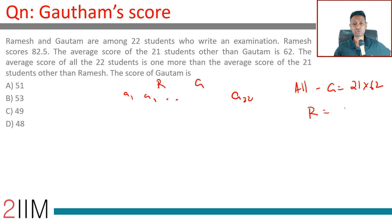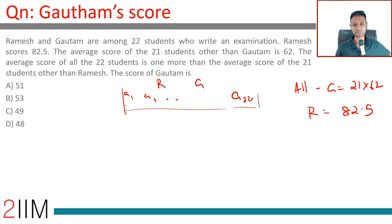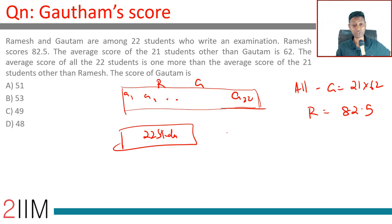Ramesh scored 82.5. The average score of all 22 students is one more than the average score of the 21 students other than Ramesh. So when all 22 students are there and Ramesh leaves, the average falls. The average score of all 22 students is one more than the average score of the 21 students other than Ramesh.